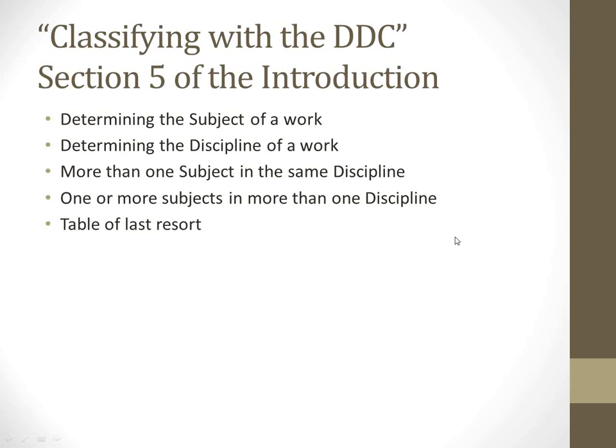Are there any questions so far before we get into the meat of classifying with Dewey? Please feel free to interrupt me with questions as we go along. Section 5 of the introduction covers the instructions on how to use Dewey Decimal Classification. The five steps are: determining the subject of a work, determining the discipline of the work, what to do if you have more than one subject in the same discipline, one or more subjects in more than one discipline, and the table of last resort. At this point I should stop and talk about the distinction in Dewey between a subject and a discipline.